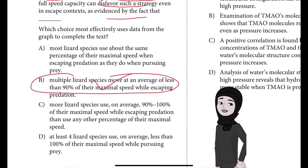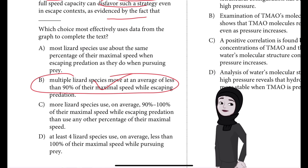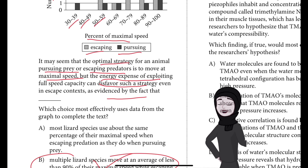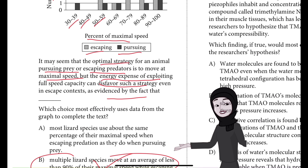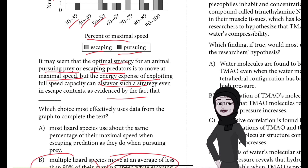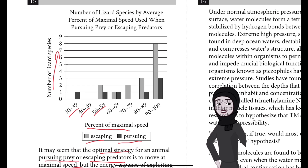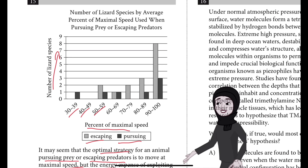Choice B is the best answer because it describes data from the graph that completes the text's discussion of lizard species that use maximal speed when escaping predators. According to the text, moving at maximal speed requires so much energy that it is not always an effective strategy — even when animals are escaping predators. The graph displays data on the average percent of maximal speed used by lizard species while either escaping predators or pursuing prey, categorizing the data for both behaviors by the number of species.